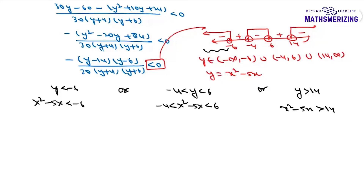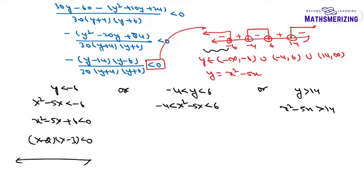Solving Case 1: x² - 5x + 6 < 0. Factorizing gives (x - 2)(x - 3) < 0. On the number line, marking 2 and 3, the sign pattern is plus, minus, plus. I need minus, so the first part gives x ∈ (2, 3).